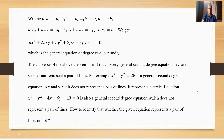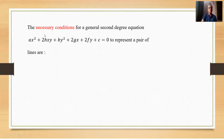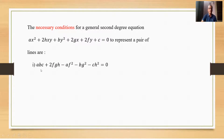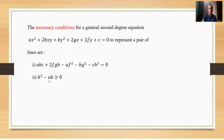To identify whether a given equation represents a pair of lines or not, the necessary conditions for the general second-degree equation ax² + 2hxy + by² + 2gx + 2fy + c = 0 to represent a pair of lines are: the determinant condition (Δ = 0), and h² − ab ≥ 0.